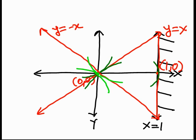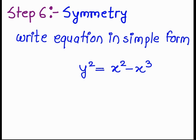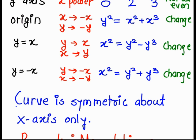So this is what we get, tangent at 1, 0. In step number 6, we have to discuss about the symmetry and we get curve is symmetric about x-axis only.